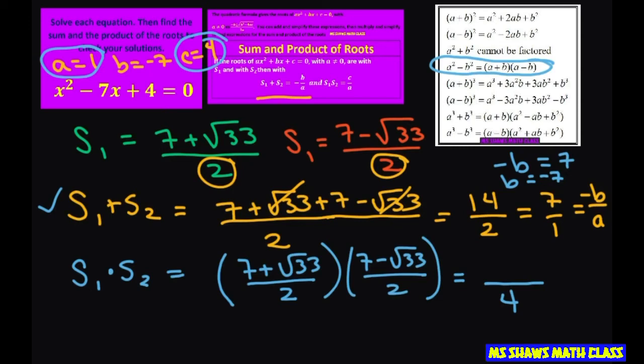going to take your 7 and square it, which is 49, then write your minus, and then square root of 33 times square root of 33 is 33.